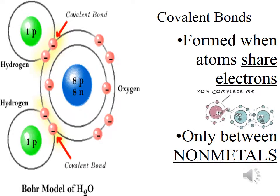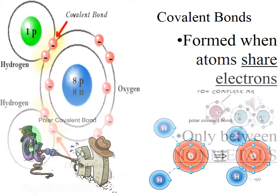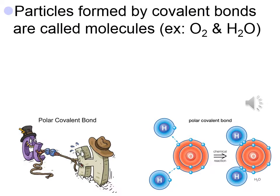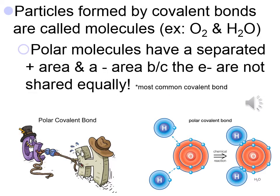Covalent bonds are formed when atoms share electrons. The prefix co- means share. It's only between non-metals. We say that covalent bonds complete each other. This is a covalent bond. The particles formed by covalent bonds are called molecules, such as a molecule of oxygen.